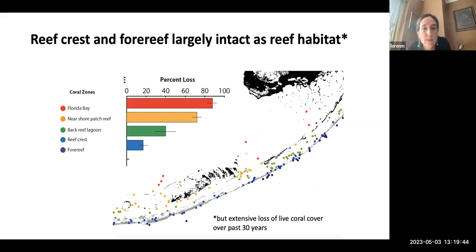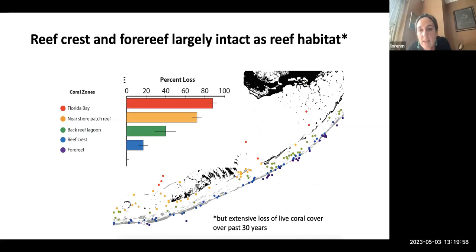In contrast, the reef crest and the fore reef are largely intact as reef habitat. There have been extensive losses of live coral over the past three decades measured in other ways, but this indicates that the reef structure is still there in those places in ways that it isn't in the Florida Bay and inshore reefs.